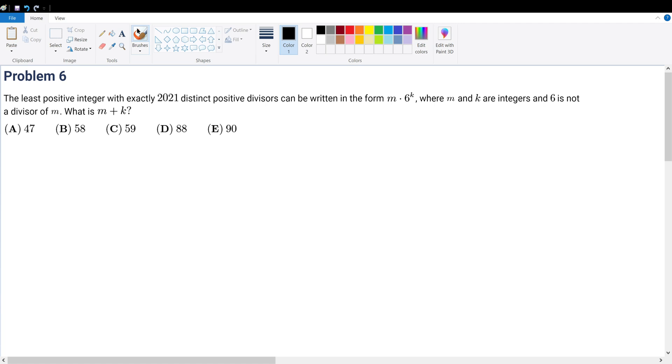We're doing AMC problem six. The least positive integer with exactly 2021 distinct positive divisors can be written in that form, and we're trying to find m and k where m plus k is the final answer.